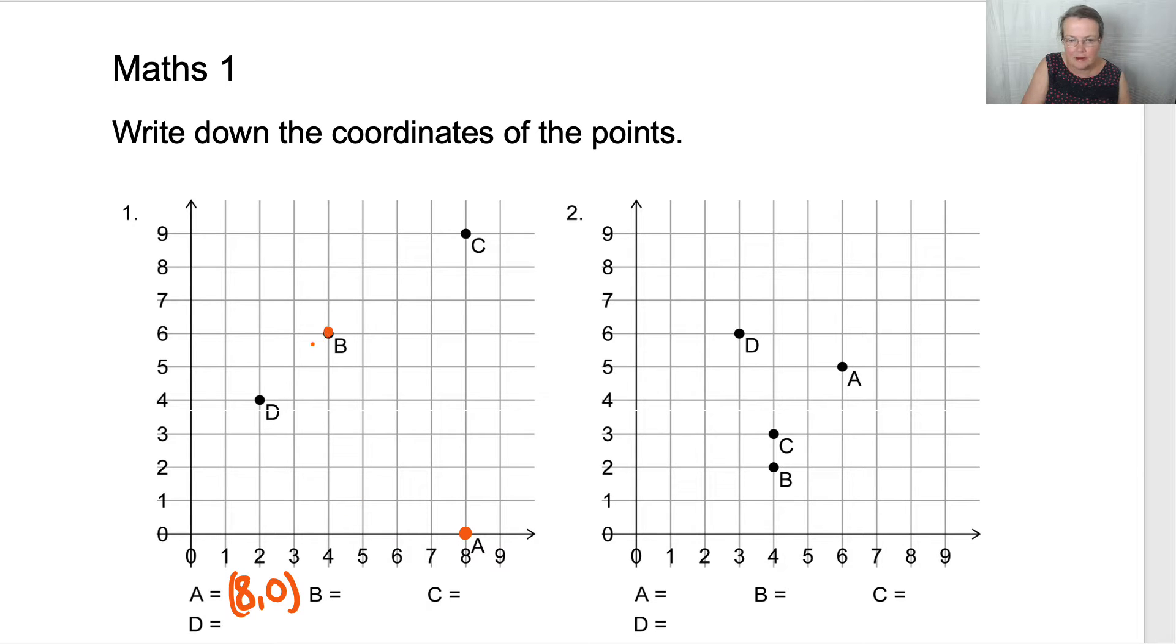Next one, B is here. So we go along the corridor, which is four, up the stairs, which is six. So that's four, six in our own little sleeping bag. Four, six. Check.